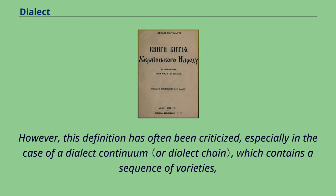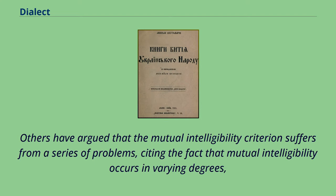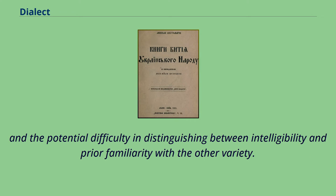However, this definition has often been criticized, especially in the case of a dialect continuum, which contains a sequence of varieties each mutually intelligible with the next, but where widely separated varieties may not be mutually intelligible. Others have argued that the mutual intelligibility criterion suffers from problems, citing the fact that mutual intelligibility occurs in varying degrees, and the potential difficulty in distinguishing between intelligibility and prior familiarity with the other variety.